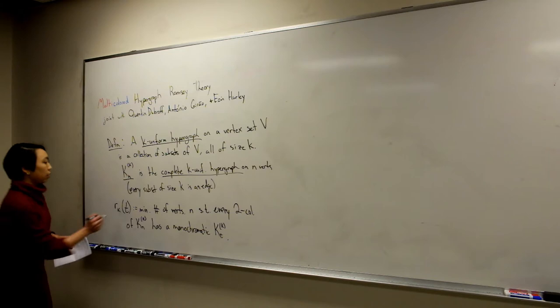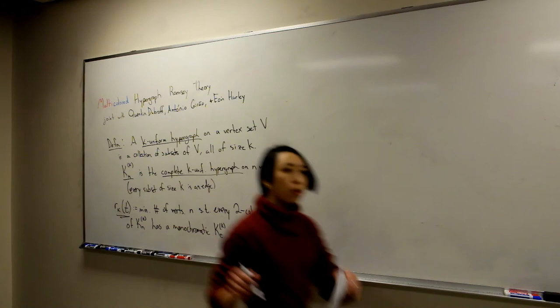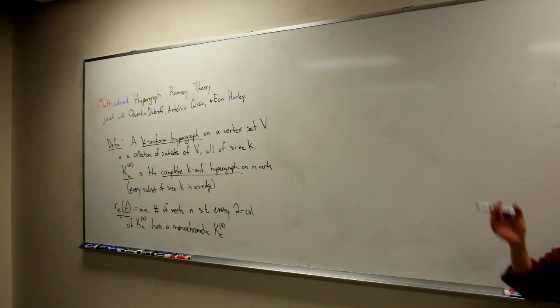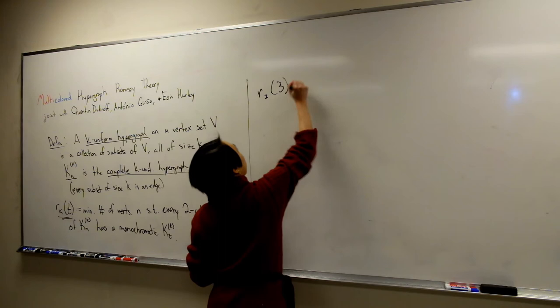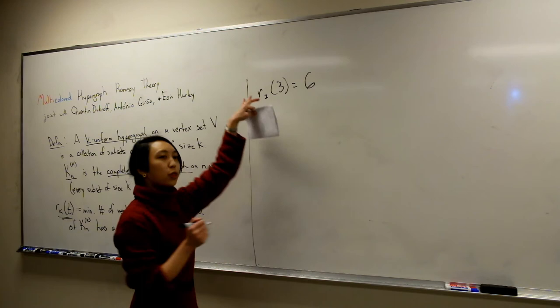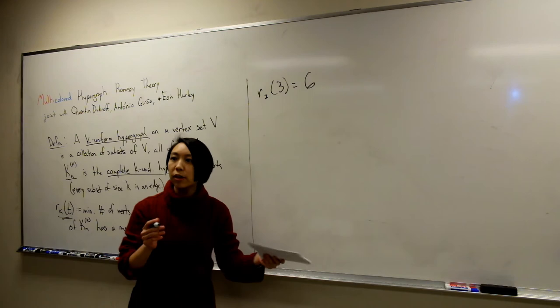The classical result is that R_2(3) = 6. There are two statements that go into this. R_2(3) > 5 means there exists a two-coloring of K_5 with no monochromatic triangles. And R_2(3) ≤ 6 means for any two-coloring of K_6, there exists a monochromatic triangle. When proving Ramsey numbers, there are always two proofs: a lower bound and an upper bound.